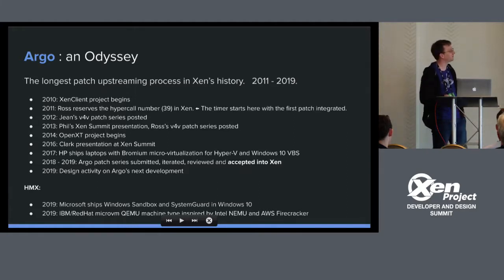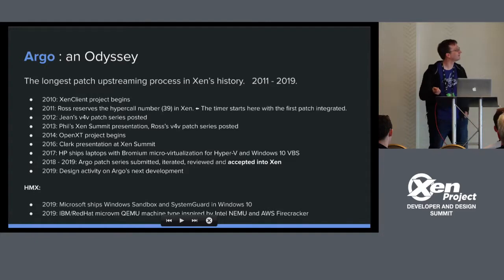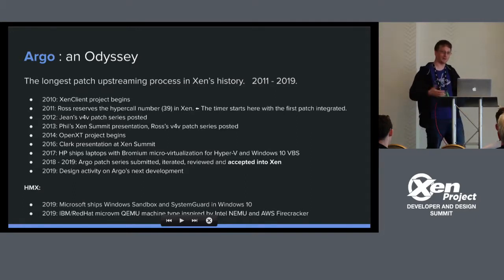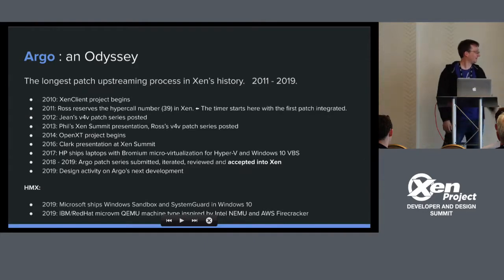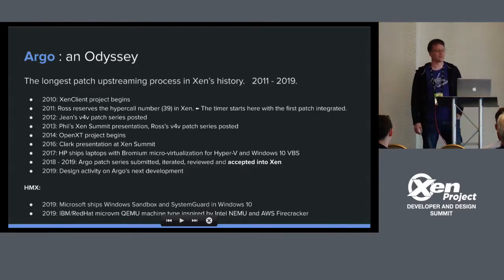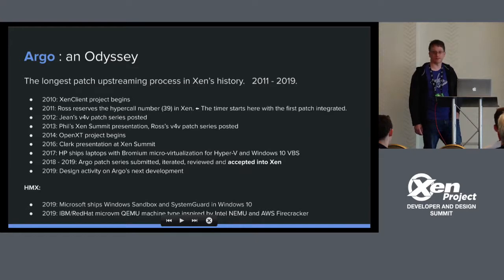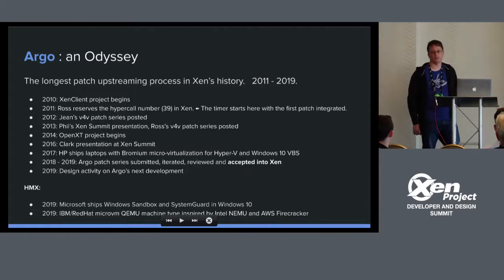There's a lot of interesting reading in those archives with input from many people. Phil prepared a presentation at the 2013 Xen Summit. Ross picked up from where John handed over with another round of patch series. In 2014 the OpenXT project began, so Xen Client's body of code became open to the world. I gave a presentation in 2016 mentioning that we would quite like this patch series to go in. In 2017, Bromium's hypervisor shipped on HP laptops, deploying this software to millions of machines. In 2018 I posted the Argo patch series, and through early 2019, after eight rounds of reviews, it was finally accepted into Xen. And we're still working on the next aspects of Argo's development and capabilities.